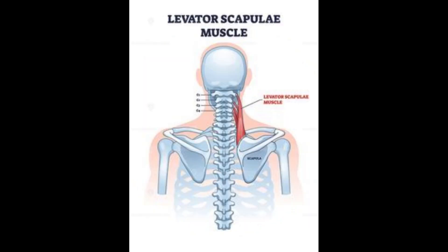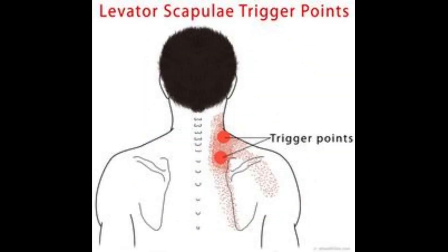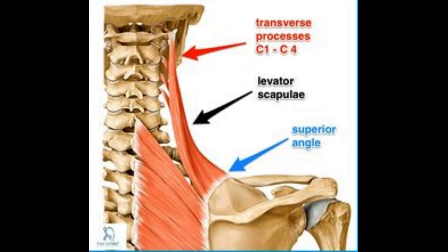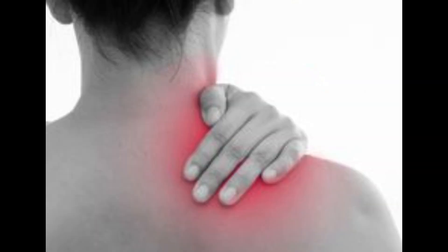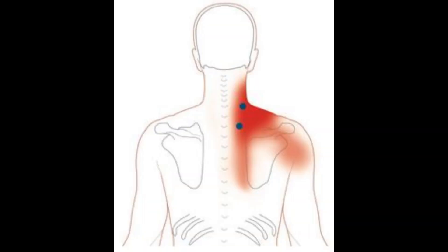Hello everyone, today we are going to discuss the levator scapulae muscle trigger points. This muscle is located in the neck and shoulder region. Trigger points in the levator scapulae muscle can cause pain and discomfort, as well as contribute to referred pain in the neck, shoulder, and upper back areas.